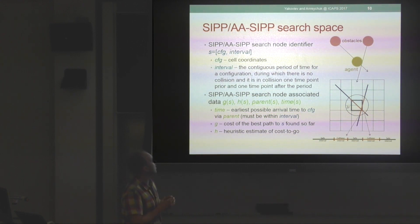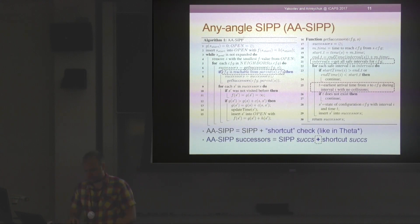We additionally store additional information associated with the node: like in A*, we have g-value, we have h-value, we have parent, and on top of that we also have time, which is the earliest possible arrival time an agent can come to the configuration moving out from parent. Here's the generic code, it's what you would see in any standard heuristic search algorithm. Basically, the main loop is on the left.